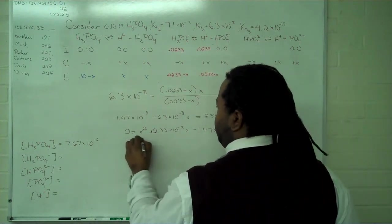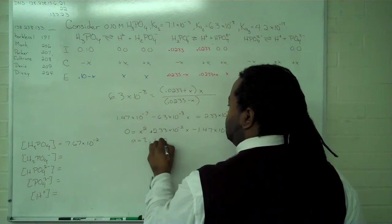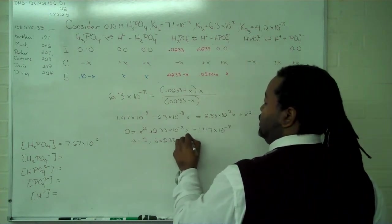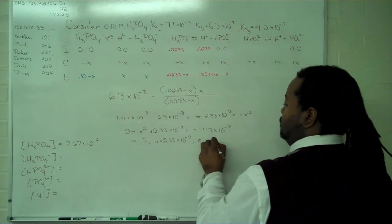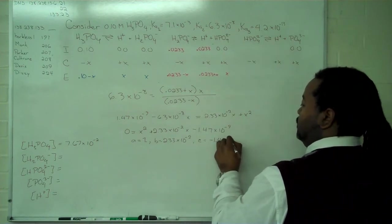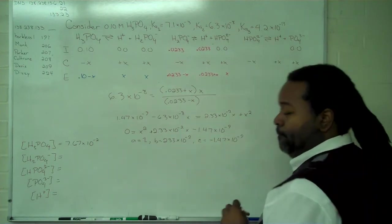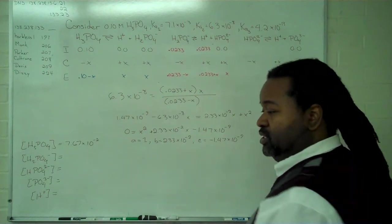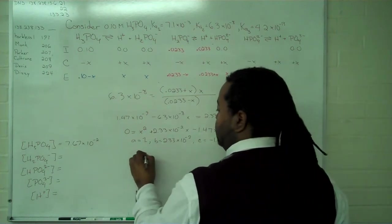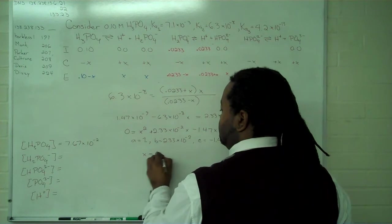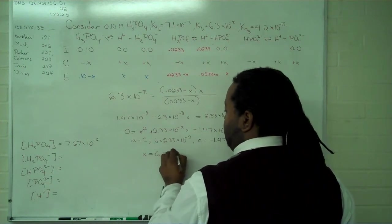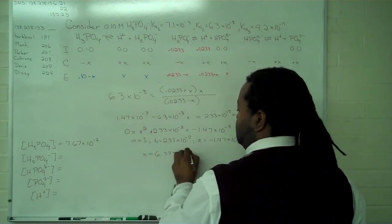This means that a equals 1, b equals 2.33 times 10 to the negative 2, and c equals negative 1.47 times 10 to the minus 9. So if we plug these values into the quadratic formula, we get a value for x: 6.39 times 10 to the negative 8.